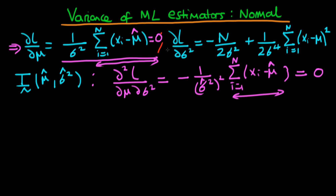Note that we could have similarly differentiated this expression with respect to mu instead and would have got exactly the same thing — it doesn't matter the order in which you differentiate our likelihood. So that's the off-diagonal elements. How about the diagonal elements?